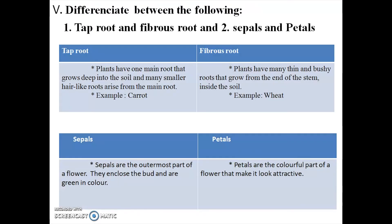Next Roman letter: differentiate between the following. First question: tap root and fibrous root. Tap root: plants have one main root that grows deep into the soil, and many smaller hair-like roots arise from the main root. Example: carrot.